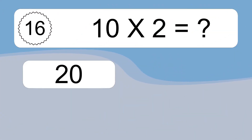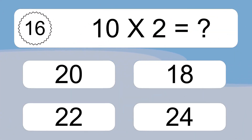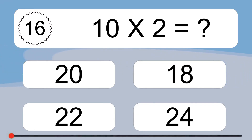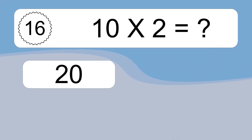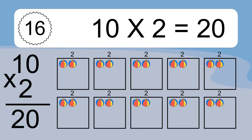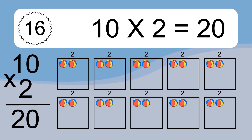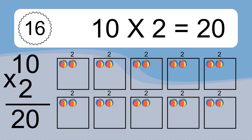10 times 2 equals what? 10 times 2 equals 20. We have 10 boxes, and each box has 2 colorful balls inside. If you count all the balls in all the boxes together, you will have 10 times 2 balls. This equals 20 balls.